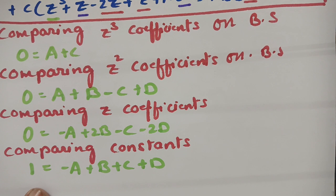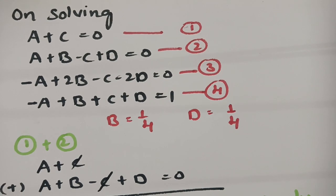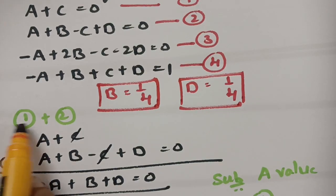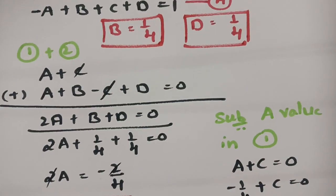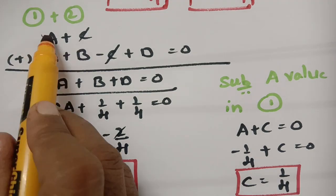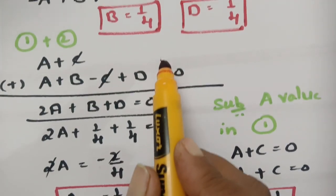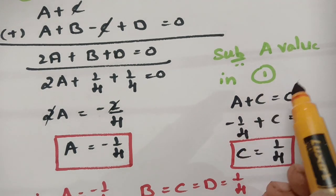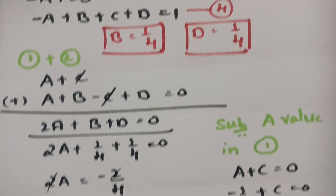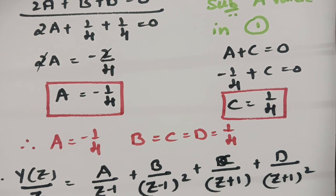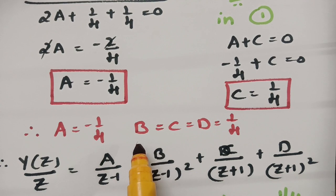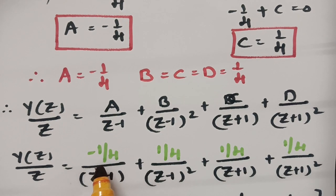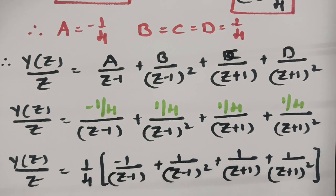Solving these four equations with B = 1/4 and D = 1/4: adding equations 1 and 2 gives 2A + B + D = 0, so 2A = −1/2, giving A = −1/4. Substituting A into equation 1 (A + C = 0) gives C = 1/4. So the values are A = −1/4, B = 1/4, C = 1/4, D = 1/4.